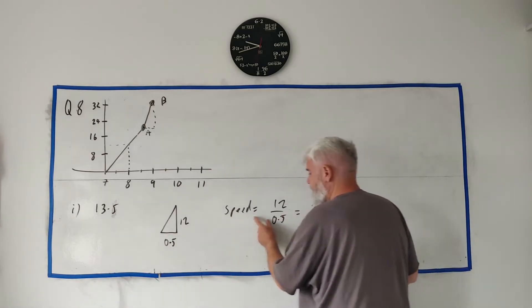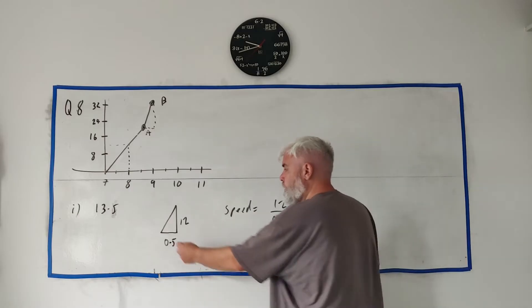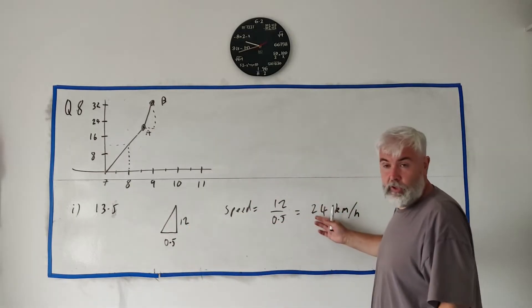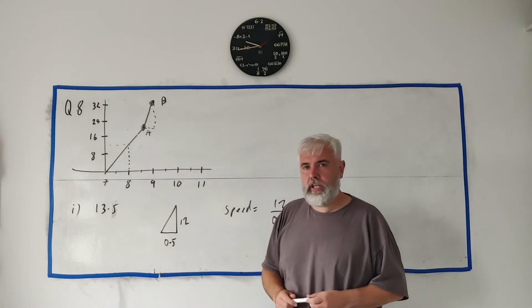Just be careful: speed, minus and plus, can look the same when you're using triangles. Going up is plus, going down is minus. This is a plus, so that's the answer to part 2.